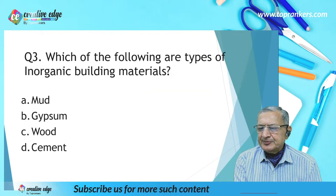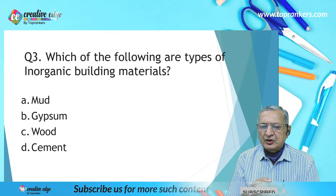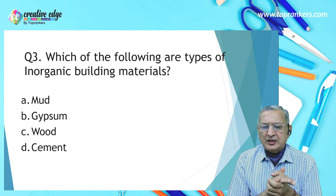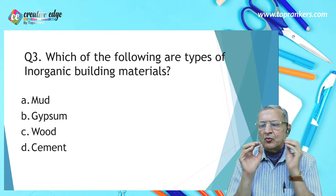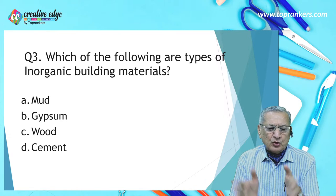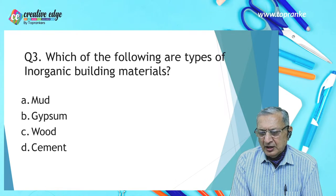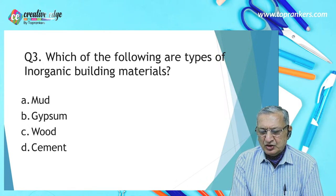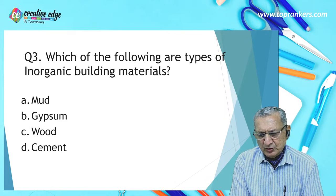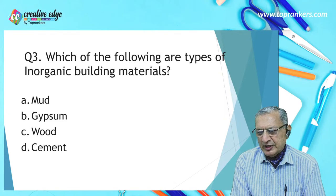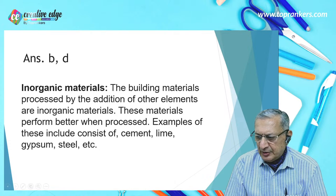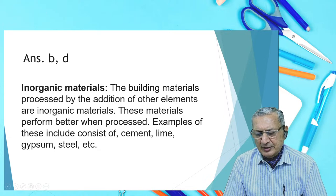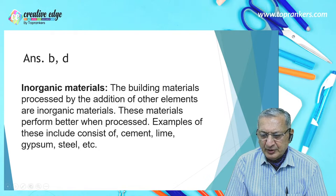The next question: which of the following are types of inorganic building materials? Select two from mud, gypsum, wood, and cement. The answer is B and D — gypsum and cement. Gypsum is an inorganic substance and cement is an inorganic material. Organic materials are mud and wood. Inorganic building materials are processed by the addition of other elements; examples include cement, lime, gypsum, and steel.